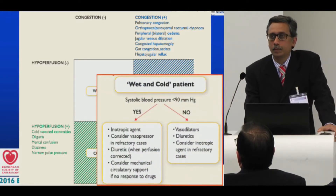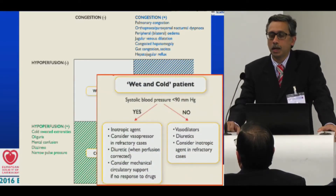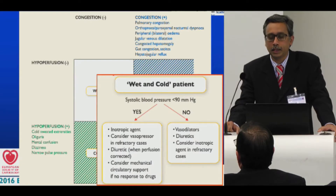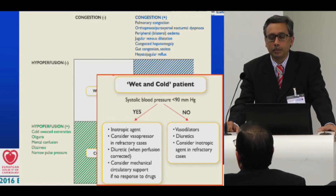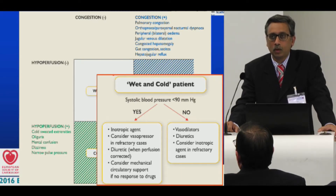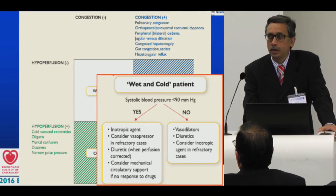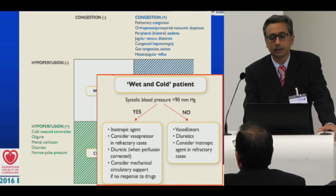So what do you try to do? You look at the blood pressure. If the blood pressure is high, then you can give vasodilators, diuretics, and maybe some inotropes if necessary. When the blood pressure is low, you probably need to use vasopressors to get the perfusion pressure up along with inotropes, maybe CRRT, as well as mechanical circulatory support.